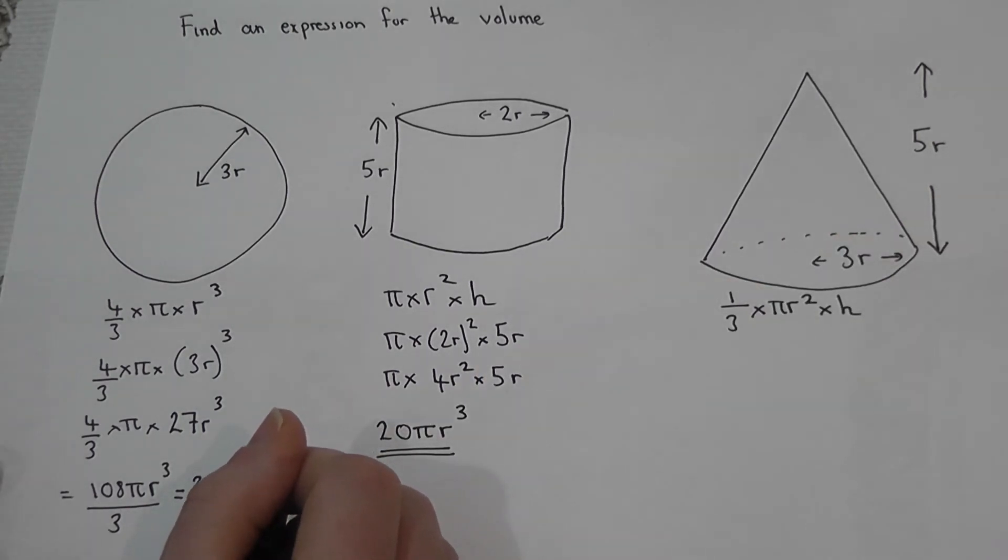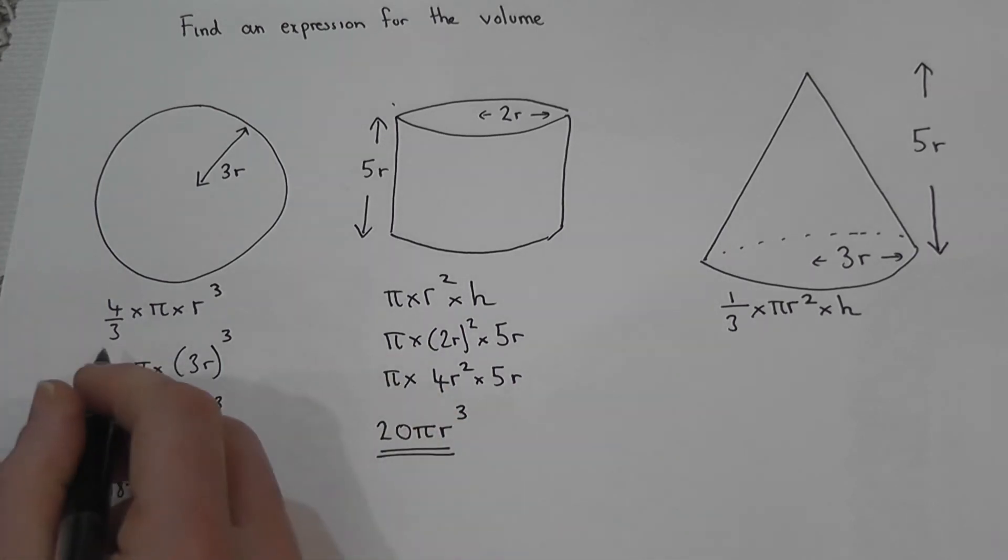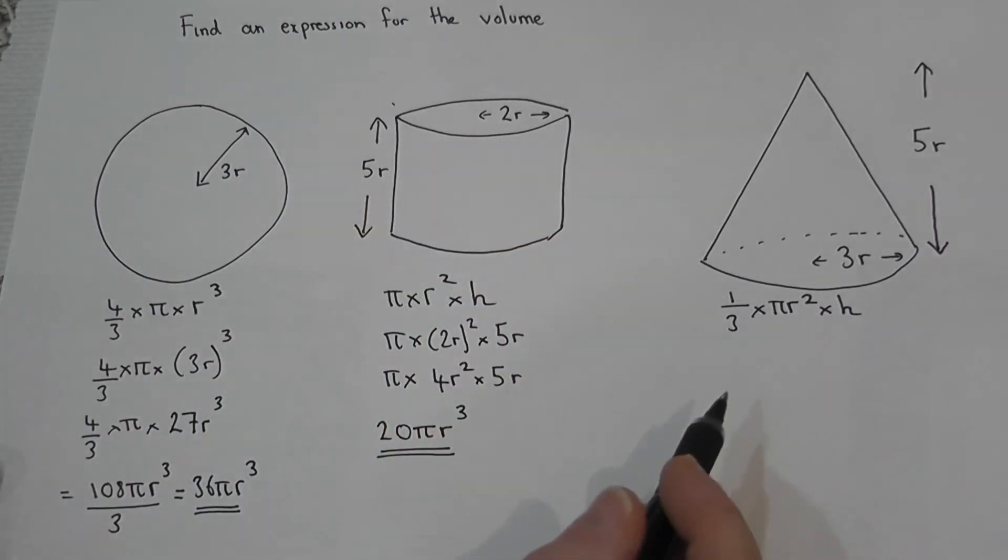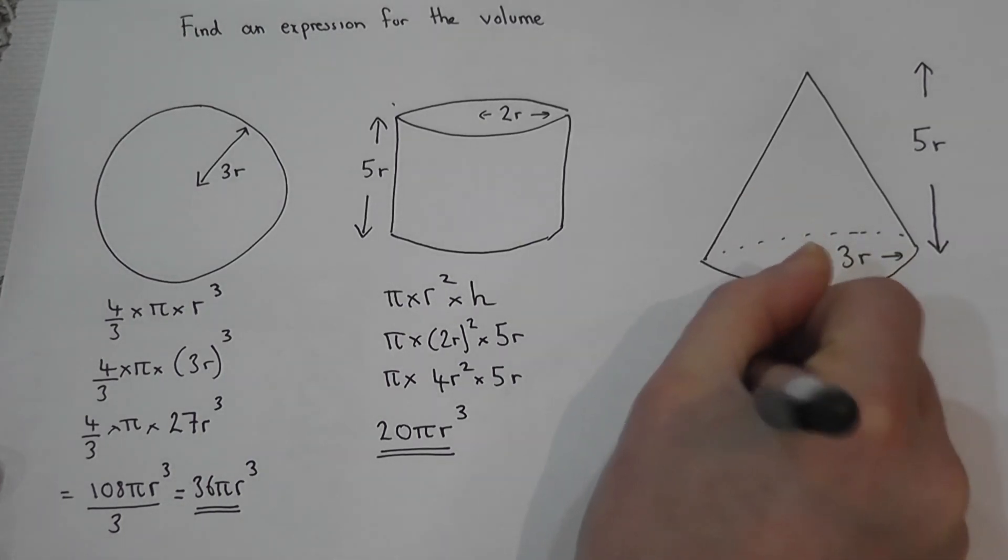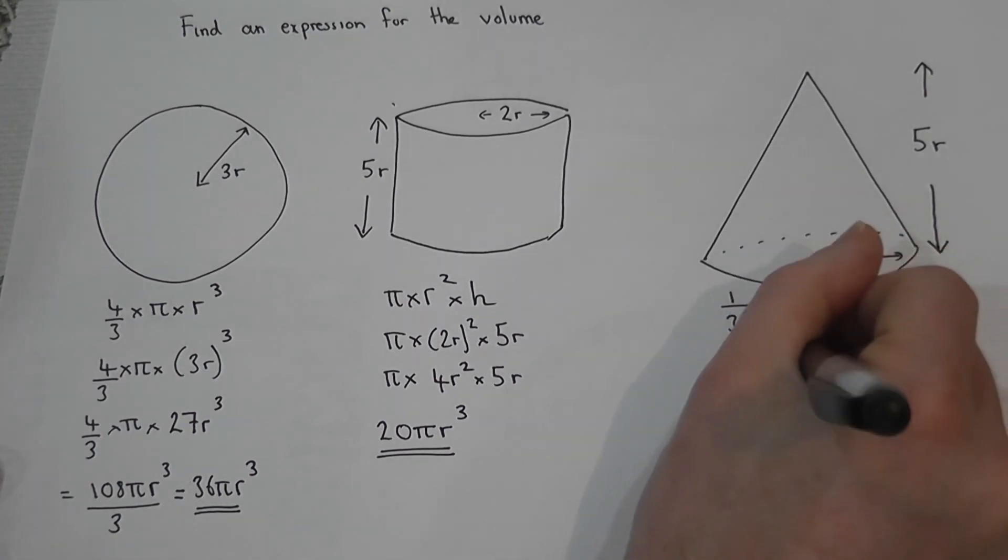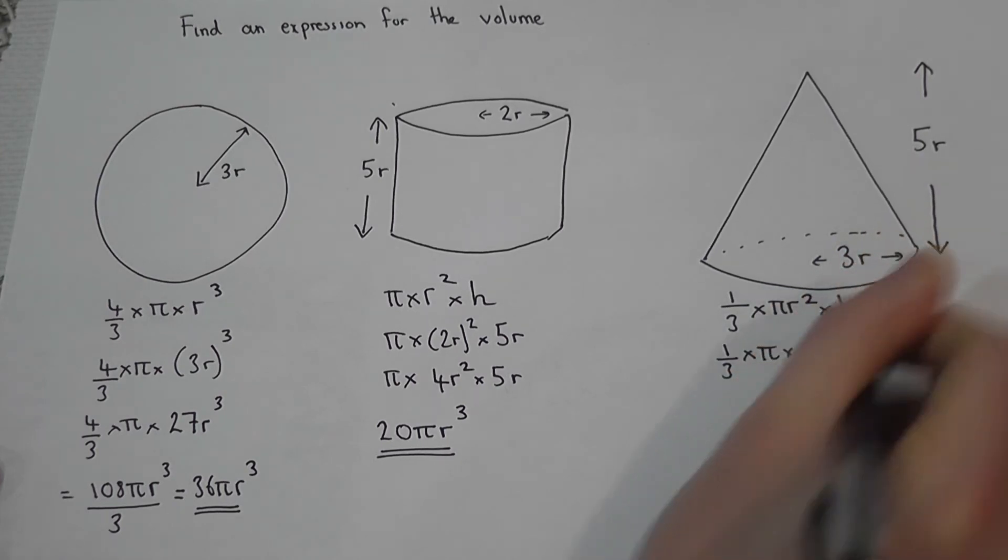So to work this out, it's a bit like the sphere and the cylinder merged together really. There's a fraction, a pi r squared and a height. So a third times by pi. The radius in this case is actually 3r squared times by the height, which is 5r.